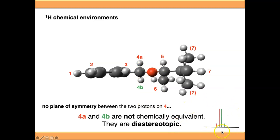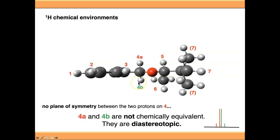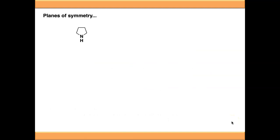Because 4a and 4b are not chemically equivalent, they give separate signals. They are capable of coupling to each other, giving two 1H doublets: 4a couples to 4b giving a doublet, and 4b couples to 4a giving another doublet. This leads us into a few more examples of breaking planes of symmetry, using substituted pyrrolidines.